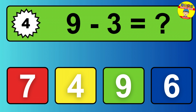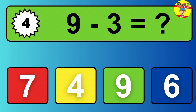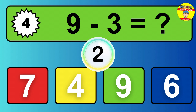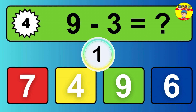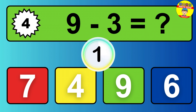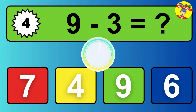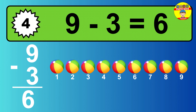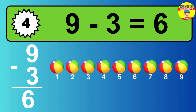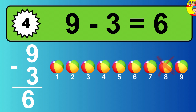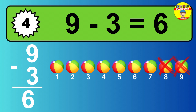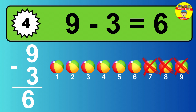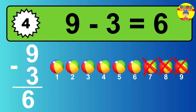Question four. Nine minus three equals what? So the answer is, nine minus three is six. Let's count it. One, two, three, four, five, six.